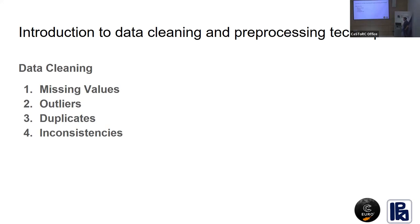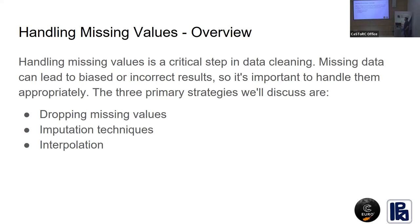The first part on data cleaning covers the four most important aspects when dealing with real-world data: missing values, outliers, duplicates, and inconsistency in your datasets. Handling missing values should be the first and most critical step in your data cleaning. If you don't deal with missing values, you are going to have biased and incorrect results. We will discuss three primary strategies: dropping missing values, imputation techniques, and interpolation techniques.